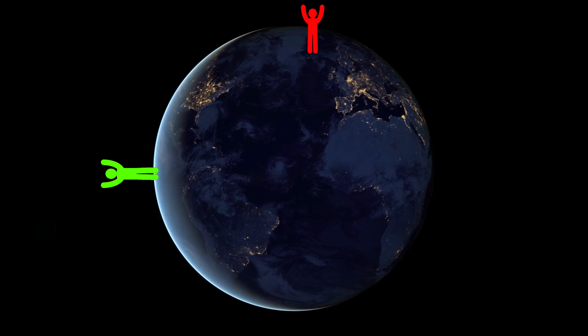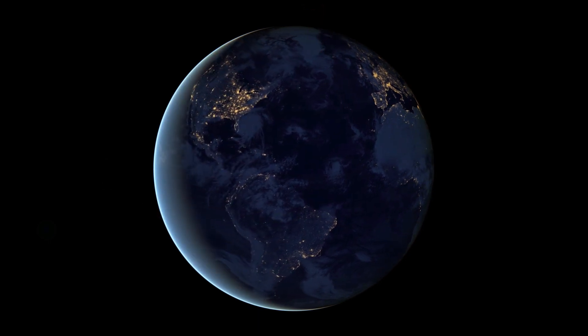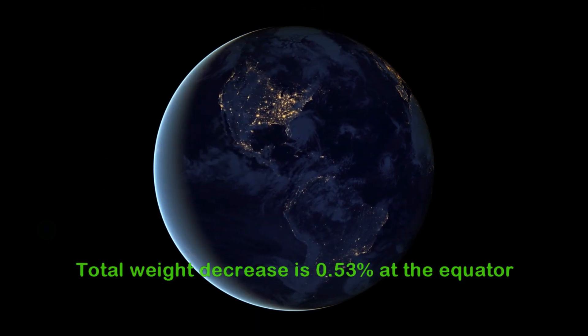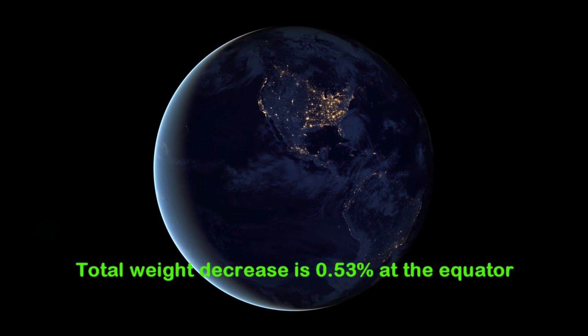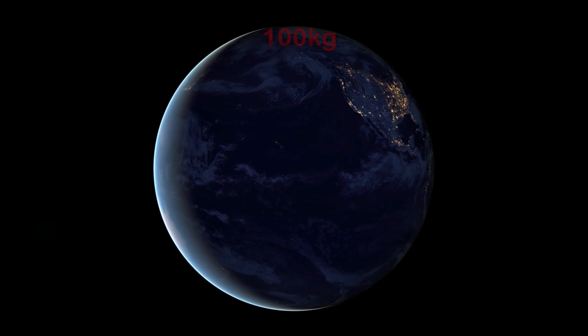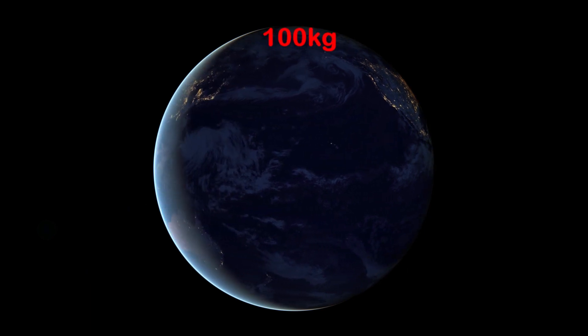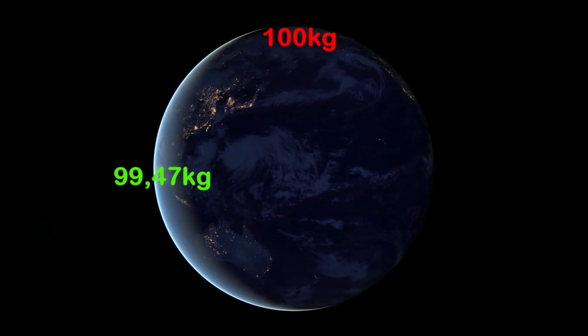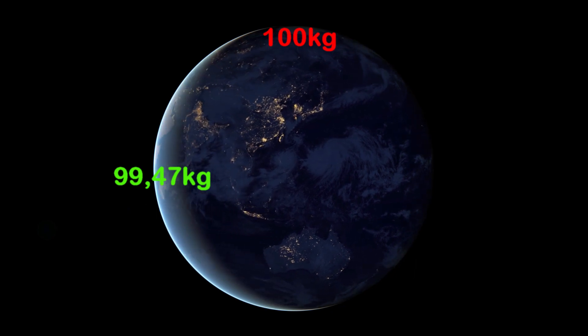When we combine these two factors, we can discover that you actually weigh about 0.53% less at the equator compared to your weight at the North or South Pole. So if you weigh 100 kilograms at the North Pole, you will weigh about 99 kilograms and 470 grams on the equator.